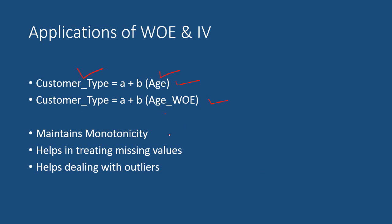The first reason why we do WoE transformation is to maintain monotonicity. We will talk about what monotonicity is and why it is important. The next important thing is that it helps in treating missing values — we can treat missing values very easily using WoE transformation. It also helps in dealing with outliers effectively. We can also compare the strength of variables. Let us see each of these advantages in a little more detail.